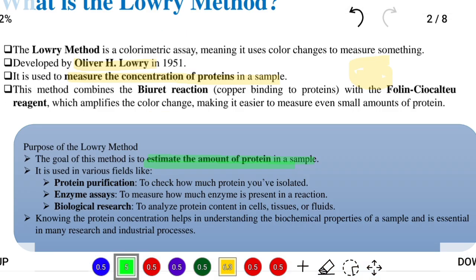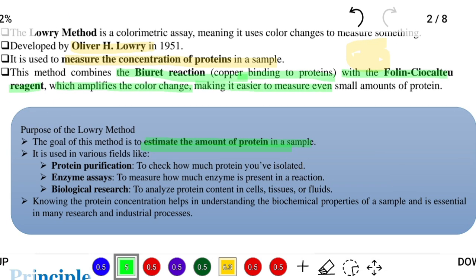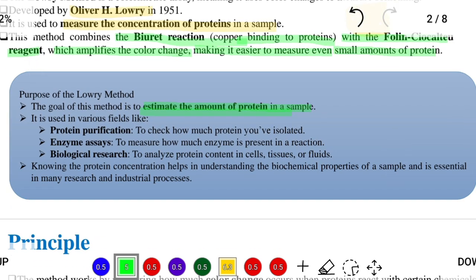The method combines the Biuret reaction, copper binding to proteins, with the Folin-Ciocalteu reagent, which amplifies the color change, making it easier to measure even small amounts of protein. It is used in various fields like protein purification.